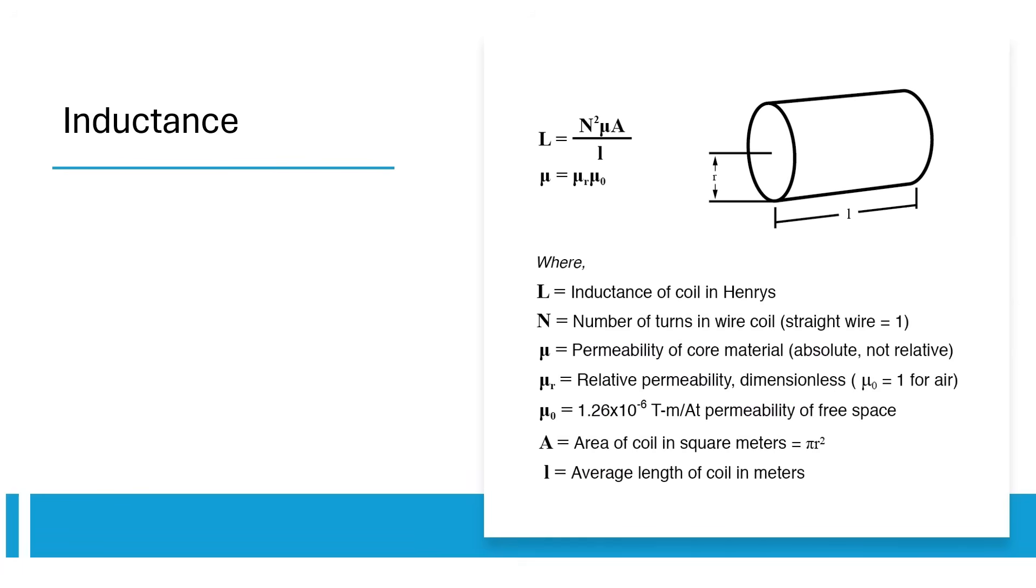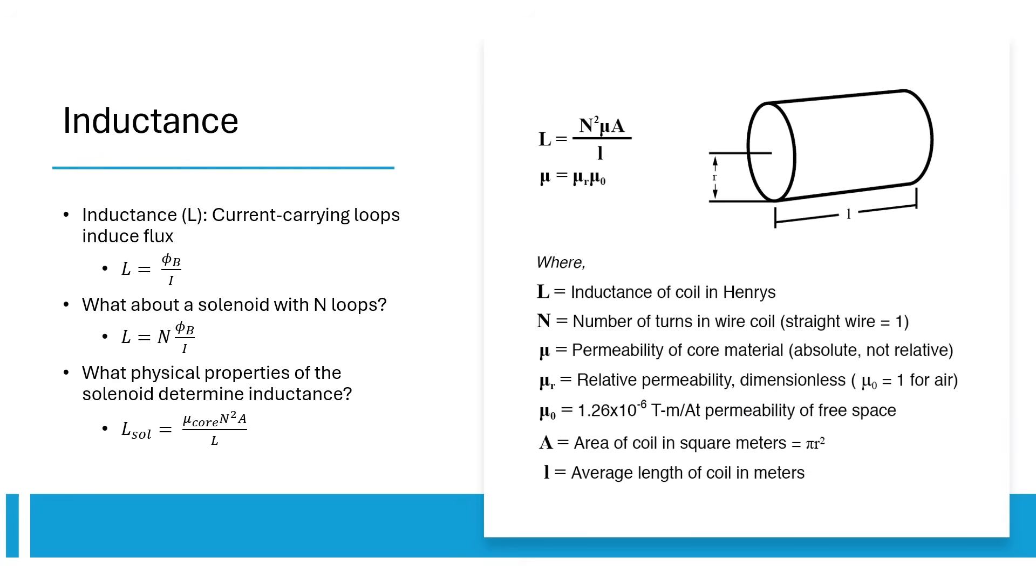Now let's switch topics and talk about inductance. When current carrying loops induce flux, flux is proportional to current with L, the inductance, being the proportionality constant. And if we have a solenoid with N loops, we just multiply by N to get L. We can also get inductance by simply using the physical properties of the solenoid. The higher the number of turns and higher the area, the higher the inductance.